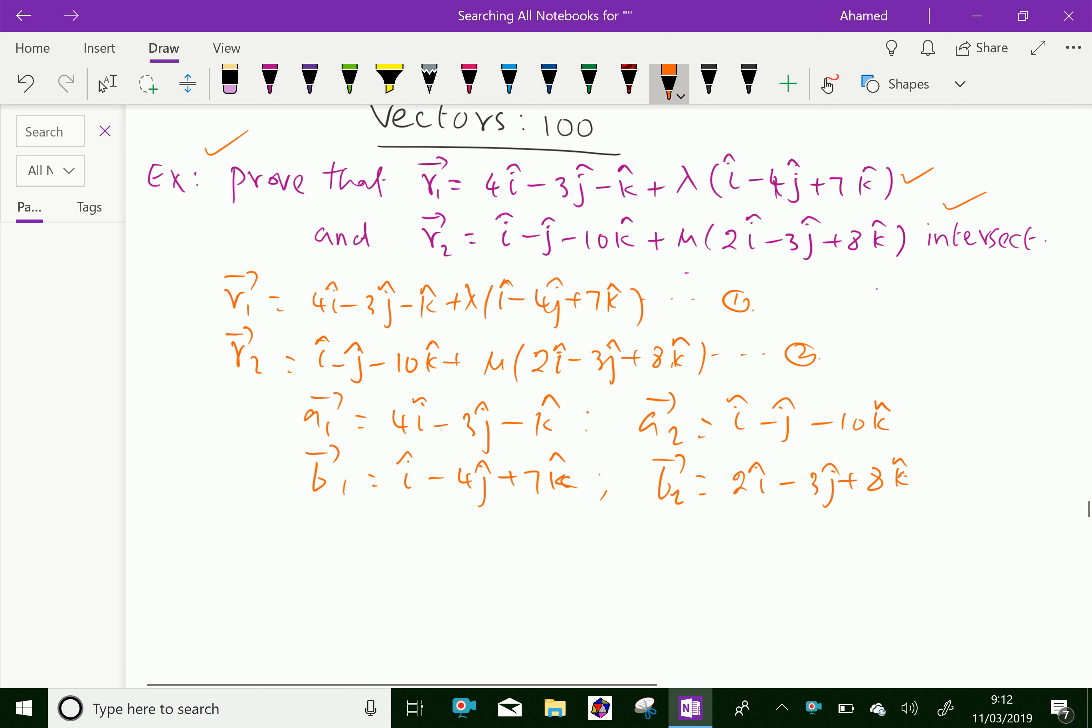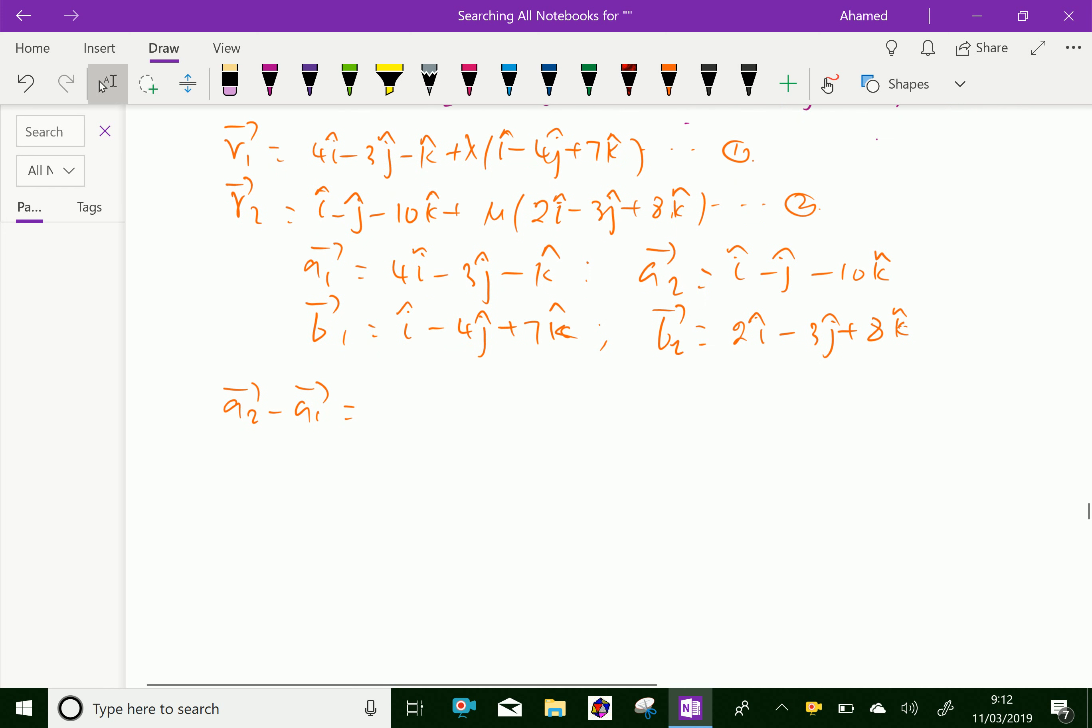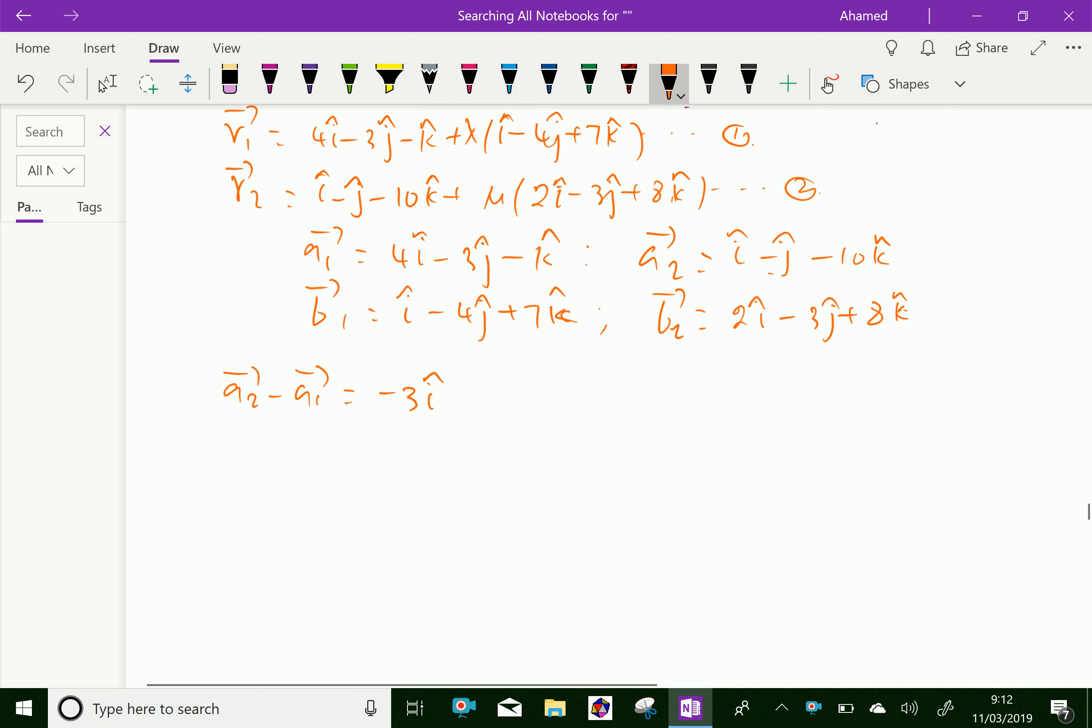Now let us find first vector a2 minus a1 equal negative 3i plus 2j minus 9k.